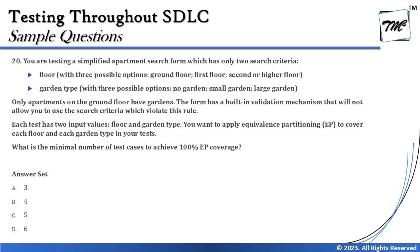Moving on to the next question, we are stepping into equivalence partitioning. This is a multiple-input type question we also covered in our tutorial series. Question 20: you are testing a simplified apartment search form with only two search criteria — floor and garden type. Floor has three options: ground floor, first floor, second or higher floor as one class. Garden type also has three options: no garden, small garden, large garden.